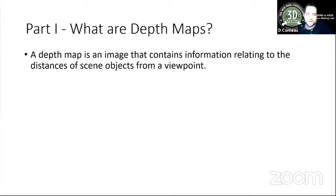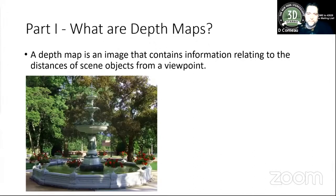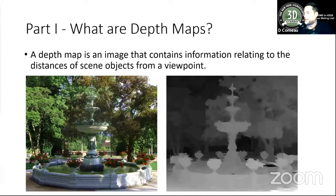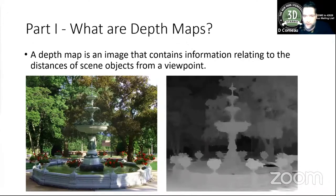Now let's understand the depth map and how it can help us in the world of stereoscopic 3D photography. As the slide says, Wikipedia defines a depth map as simply an image that contains information relating to the distances of seen objects from a viewpoint.